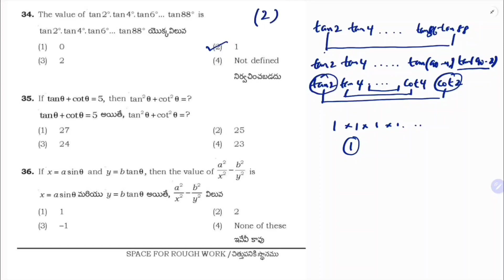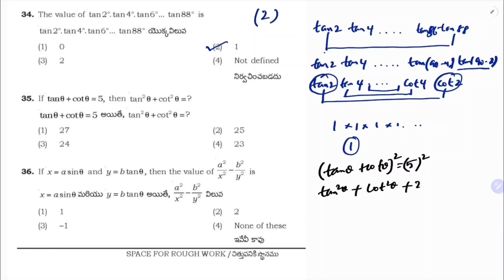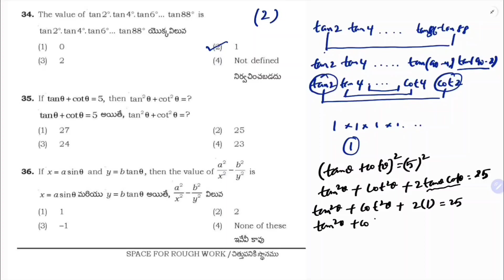If tan θ + cot θ = 5, find tan²θ + cot²θ. Squaring both sides: (tan θ + cot θ)² = 25, giving tan²θ + 2·tan θ·cot θ + cot²θ = 25. Since tan θ · cot θ = 1: tan²θ + cot²θ + 2 = 25, so tan²θ + cot²θ = 23. Correct option is 4.